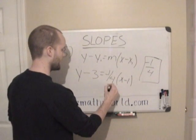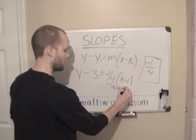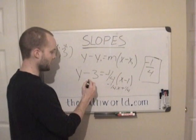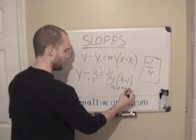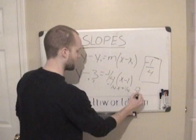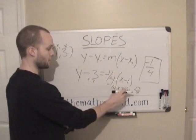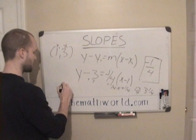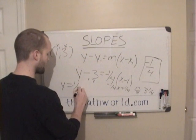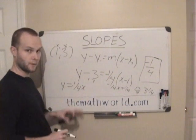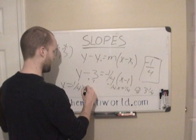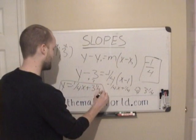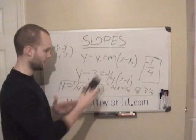If we multiply these out, we get negative 1 fourth x plus 1 fourth. Remember, multiply two negatives together and you get plus 1 fourth. Then if we add 3 to both sides to get y by itself, then we're going to get 13 over 4. 3 plus 1 fourth is 13 over 4, or 3 and 1 fourth, it doesn't matter how you write it. But in our problem, we're going to get y equals negative 1 fourth x, remember negative 1 fourth is our slope, and we're going to have plus 3 and 1 fourth, or 13 over 4.